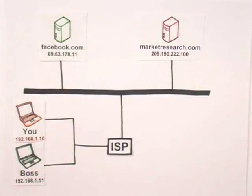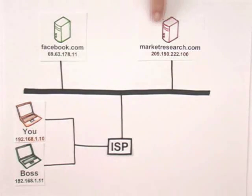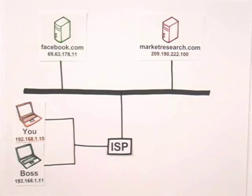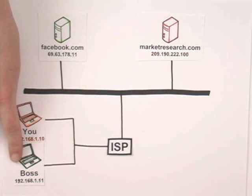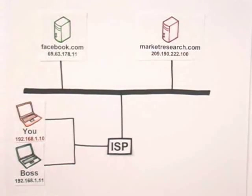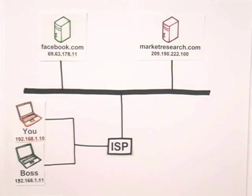Imagine you're at work sitting next to your boss, and you're both surfing online. Your boss is doing market research, and you're updating your Facebook profile. You're both sending packets back and forth over the Internet. But what's to keep your packets from accidentally ending up on your boss's screen? That could be embarrassing. The solution to that problem is IP addresses and routers. Everything connected directly or indirectly to the Internet has an IP address — everything.